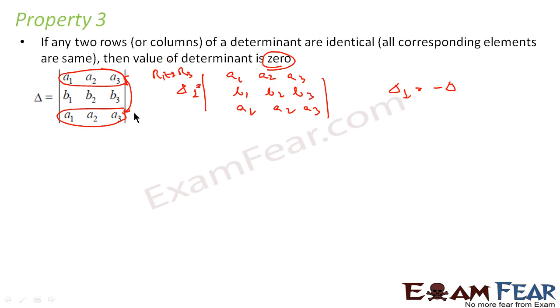So if this is some k, this is nothing but minus k. Why? Because the property just we learned says that if you interchange two rows then the value of determinant gets a negative sign. Now if you can see clearly, this is exactly equal to this. If you match the element a1 a2 a3, b1 b2 b3, a1 a2 a3, they're exactly same.